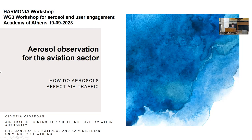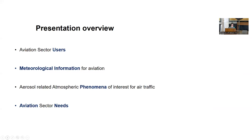There are four sections in this presentation. The first two are a brief introduction to who the aviation sector users are and what the aviation meteorological information sharing system is today. The third and main part is related to aerosols and atmospheric phenomena of operational interest for the aviation community, and at the end there is a summary of aviation sector needs.